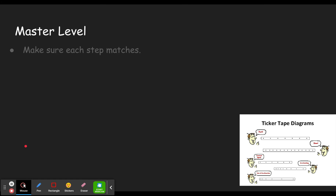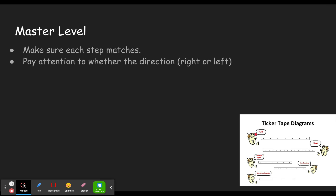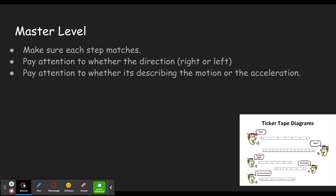The master level simply has more steps — the car will do three different things. Make sure each step matches. If it's moving along at constant velocity, then stays in one place for a while, then moves back slower or accelerates as it moves back. Pay attention to whether the direction is right or left for each of the three steps, since they may be different. The harder part is making sure you're paying attention to whether it's describing the motion or the acceleration.